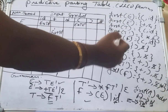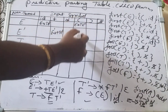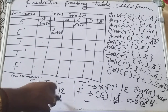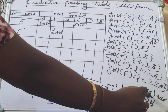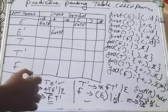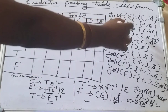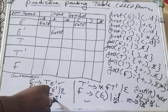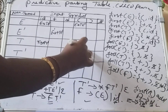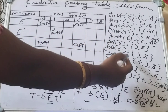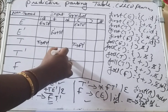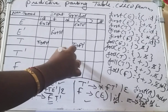Next, FIRST(T) = {open parenthesis, id}. So in the T row under open parenthesis and id, add the production T derives F T'. For T', FIRST(T') = {star, epsilon}. In the star column of the T' row, add the production T' derives star F T'. We will handle epsilon later.